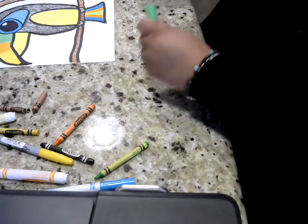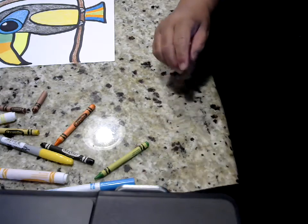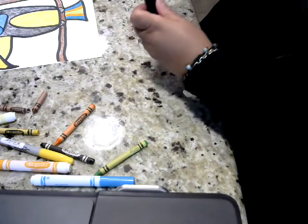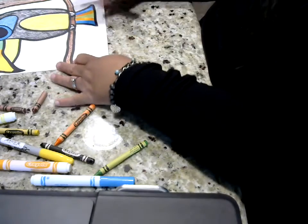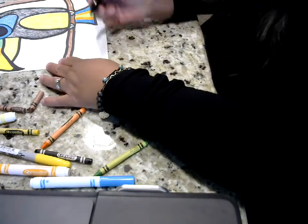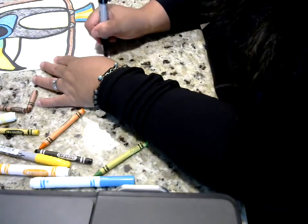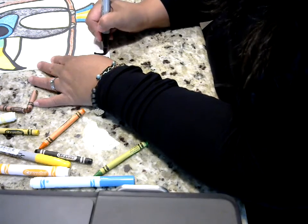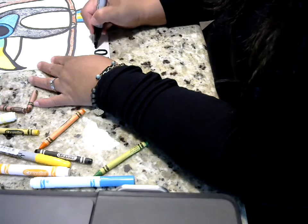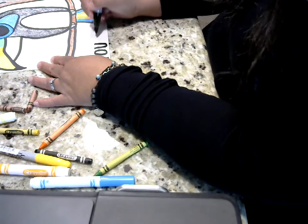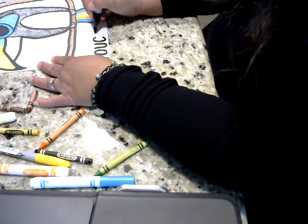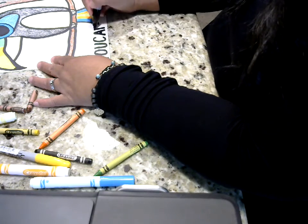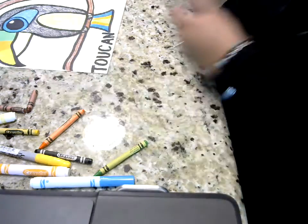And then we are actually going to write the word toucan. And the word toucan starts with a T. So we're going to write T O U C A N Toucan.